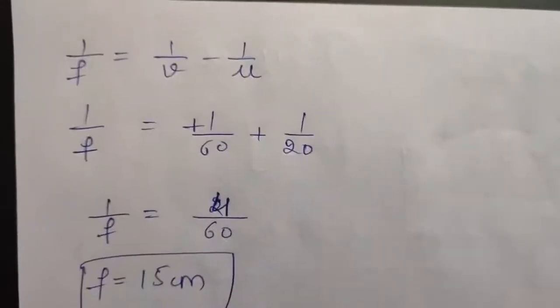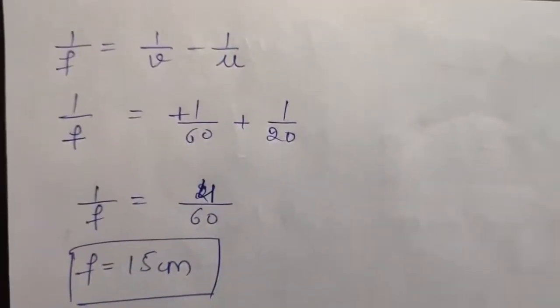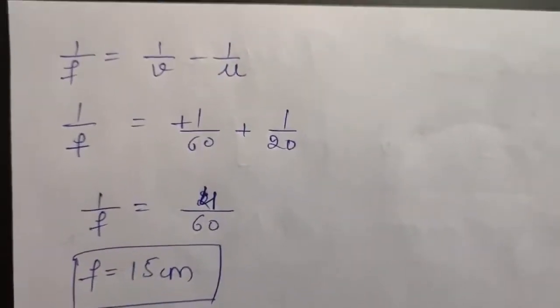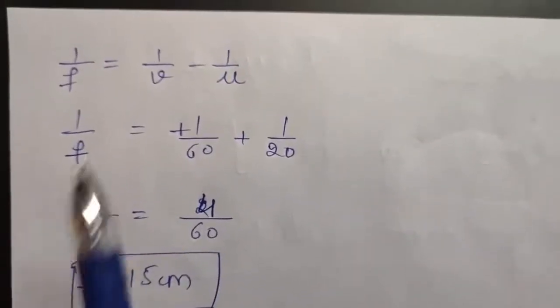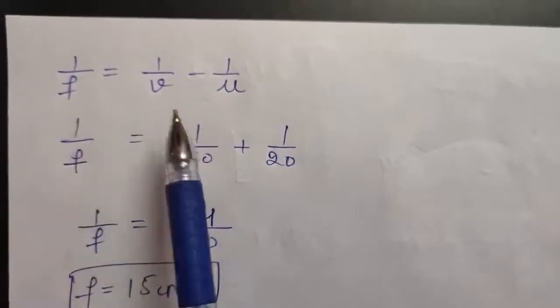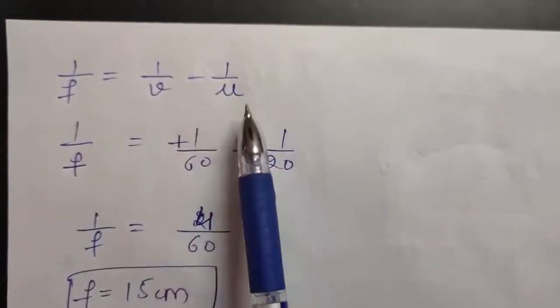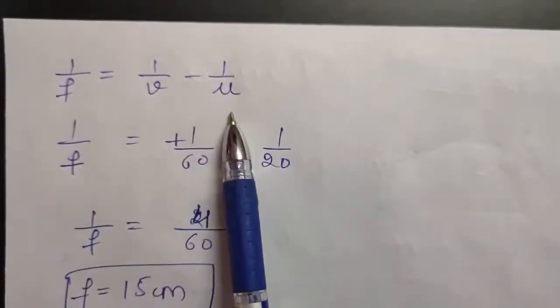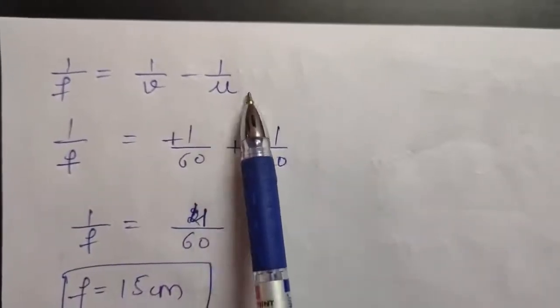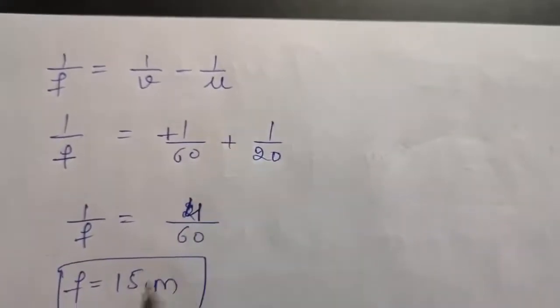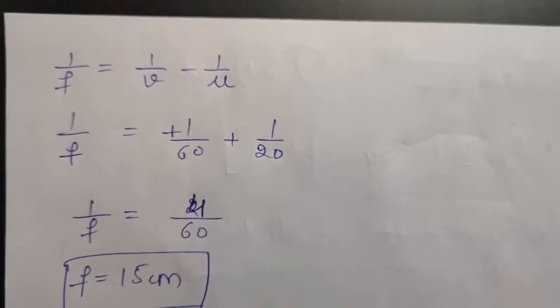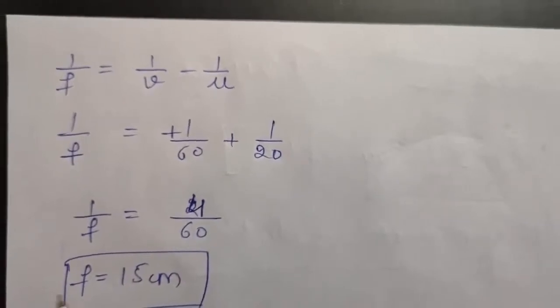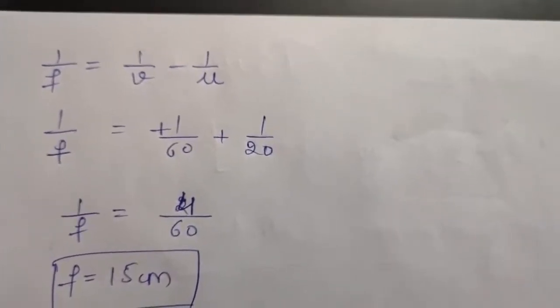If you know v and u, by using the mirror formula — 1 upon f equals 1 upon v minus 1 upon u — you can calculate focal length, which will come to be 15 centimeters.